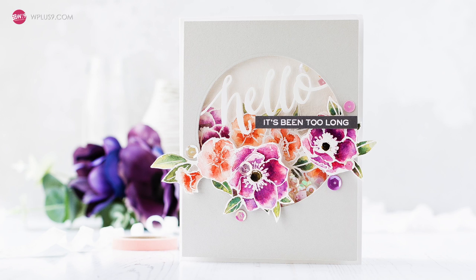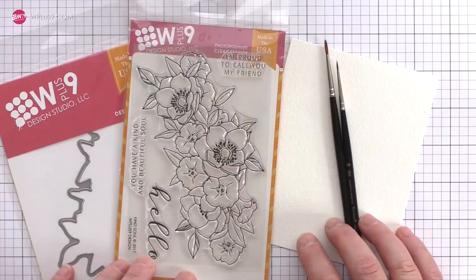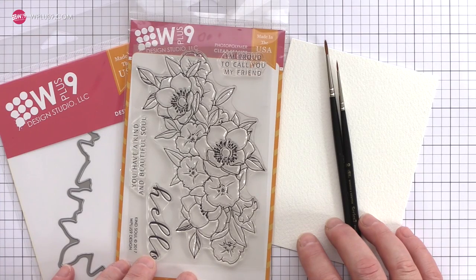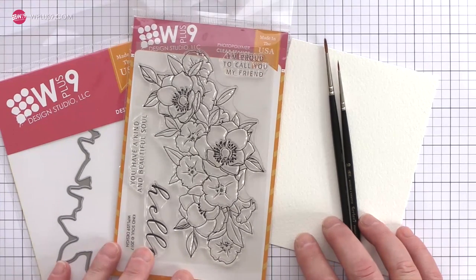As soon as I saw the Kind Souls set I knew I wanted to use it as I love the delicate anemones and petunias which have been collected into a beautiful arrangement. The set comes with a die but I'm not going to use that today.